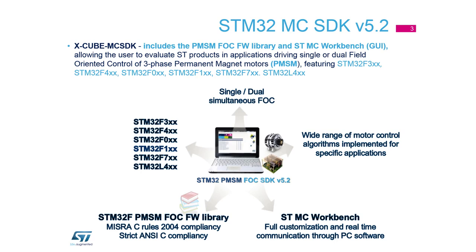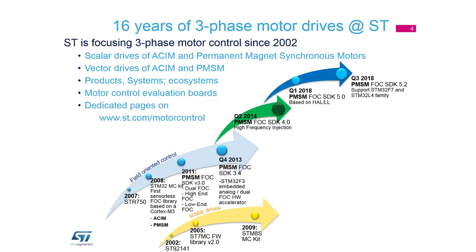Then there's a library in MISRA C rules and some graphic interface — a PC application called ST Motor Control Workbench, which you'll see in detail later. Our timeline covers more than 16 years: we started in 2002 with old families and scalar drive, then switched to field oriented control. The next step is 4.3 with additional algorithms, and we're switching to version 5.0 where we move from the standard peripheral library to the HAL or low-layer library, which is required to support new families.